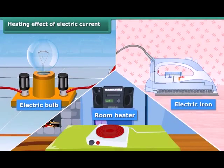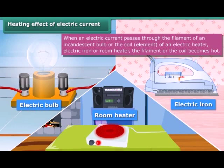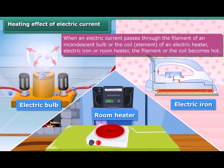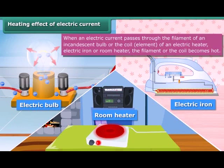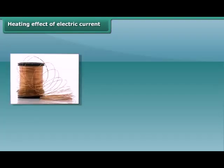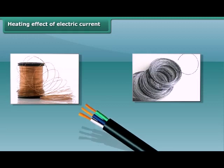When an electric current is passed through a metallic wire — like the filament of a bulb or the coil of an electric heater, geyser, electric iron, or room heater — the coil becomes hot and glowing. This is known as the heating effect of electric current. In this condition, they radiate heat and light. The amount of heat produced in a wire depends on its material, length, and thickness.